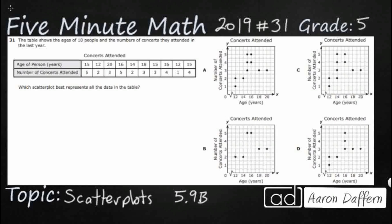Hello, and welcome to 5-Minute Math. Today we are looking at the 5th grade concept of scatter plots. This is standard 5.9b in the great state of Texas, and we are using item number 31 off the 2019 released STAR test.